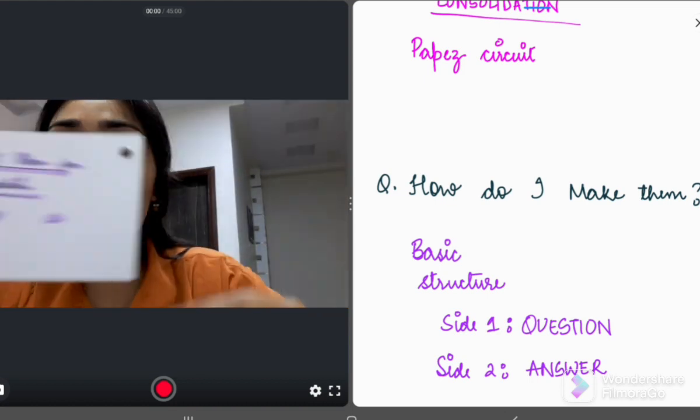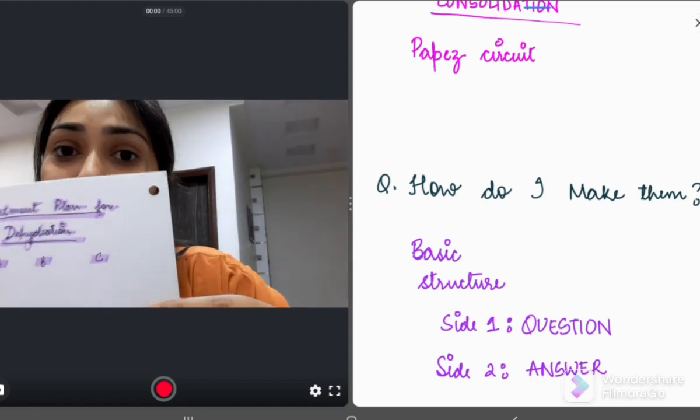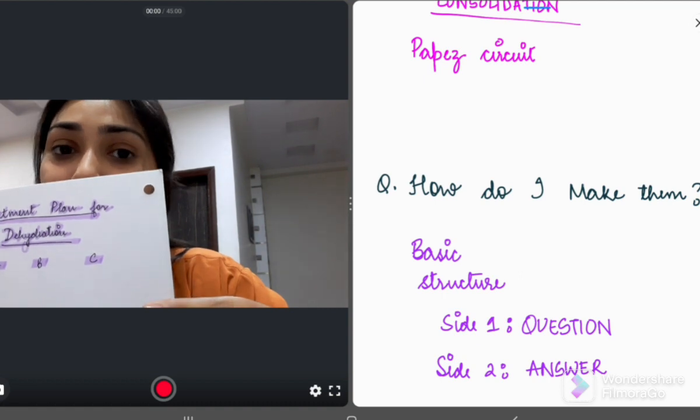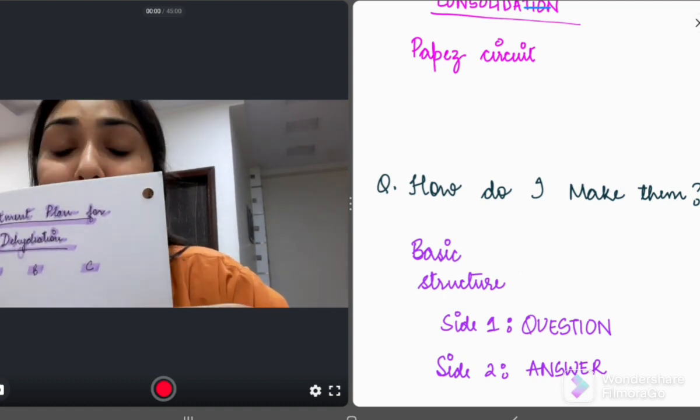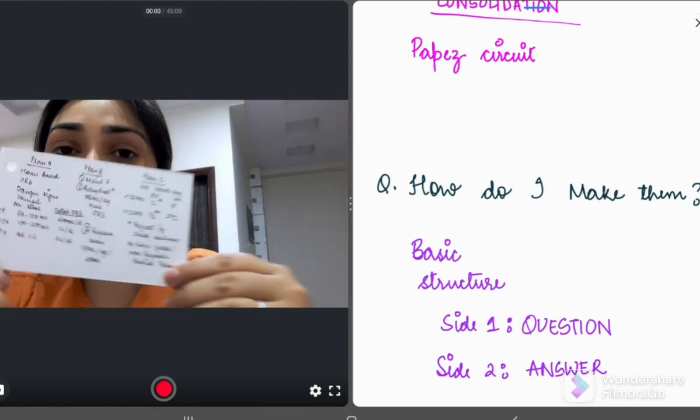So as you can see, on side one, there's always a question or a topic. Like in this flashcard, the side one includes treatment plan for dehydration and asks me what are the plan A, plan B, and plan C. And side two will always have the answer to that question.